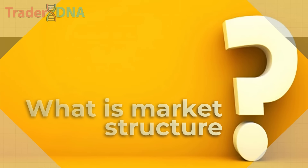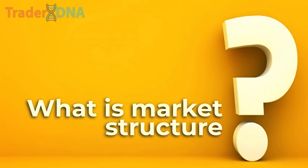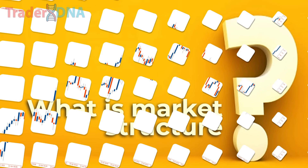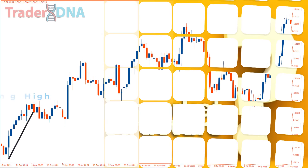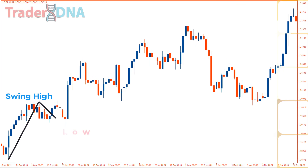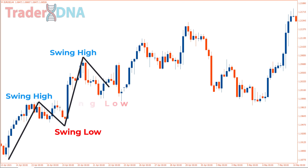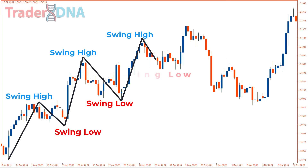First, let's start with a question: what is market structure? When we talk about market structure, we're referring to swing highs and swing lows in price movements, as well as areas where prices have shown previous reactions. We can consider all of these as part of the market structure that forms the framework for price movements.